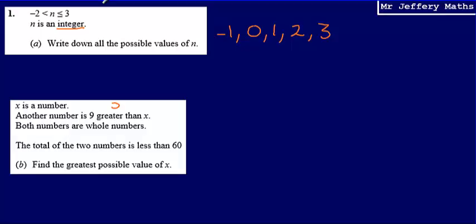So we can think of our first number as x. And then if a number is 9 greater than x, we could say that will be x plus 9. Then we're told the total of the two numbers is less than 60. So if I total x and x plus 9, that gives me 2x plus 9. And this is less than 60.